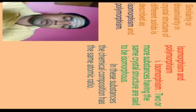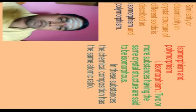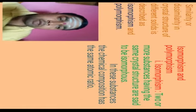Isomorphism means two or more substances have the same crystal structure — they are said to be isomorphous. In these substances, the chemical composition has the same atomic ratio, i.e., the law of definite proportions applies. The laws of conservation of mass, definite proportions, and multiple proportions are also relevant to isomorphism and polymorphism.